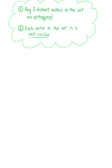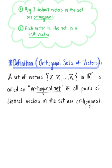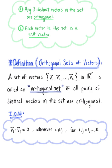So without further ado, let's look at the definition for an orthogonal set of vectors. A set of vectors, say vector v sub 1 through vector v sub k in Rn, is called an orthogonal set if all pairs of distinct vectors in the set are orthogonal. In other words, the dot product of vector v sub i with vector v sub j is equal to 0 whenever i does not equal j, for all i, j equaling 1 through k.